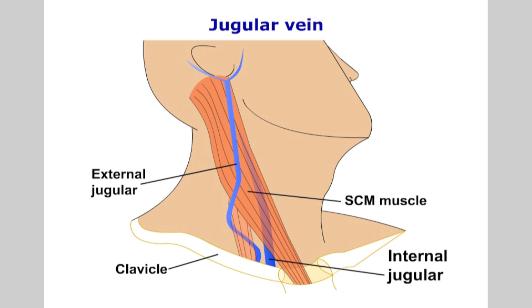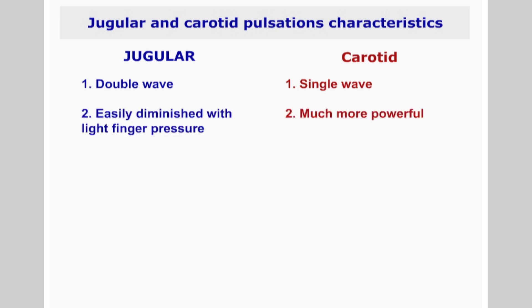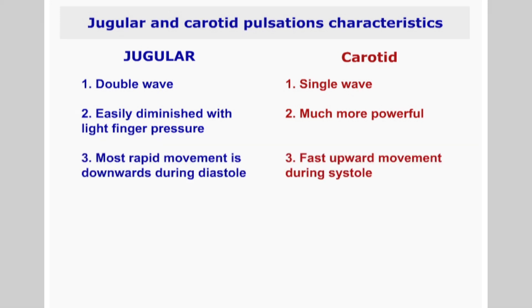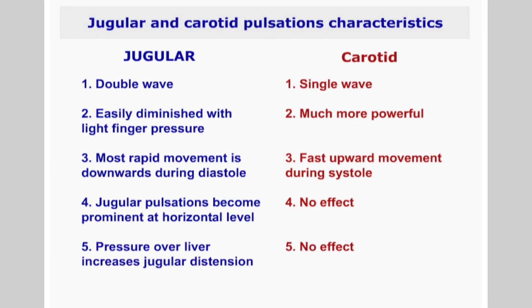Next, assess the jugular venous pressure. Ensure that you understand the location of the internal jugular vein in the neck. To distinguish between carotid pulsations and venous pulsations, bear in mind the following: jugular pulsations have a double wave for each heart stroke, while the carotid produces a single pulsation for each systole. Jugular pulsations are easily diminished with light finger pressure, whereas carotid pulsations are much more powerful. In the jugular, the most rapid movement is downwards during diastole, whilst the aortic pulsations cause a fast upward movement during systole. Jugular pulsations become more prominent as you lower the patient's head from 90 degrees toward horizontal. Putting pressure on the patient's abdomen increases venous return pressure and will raise the level of jugular pulsations in the neck.